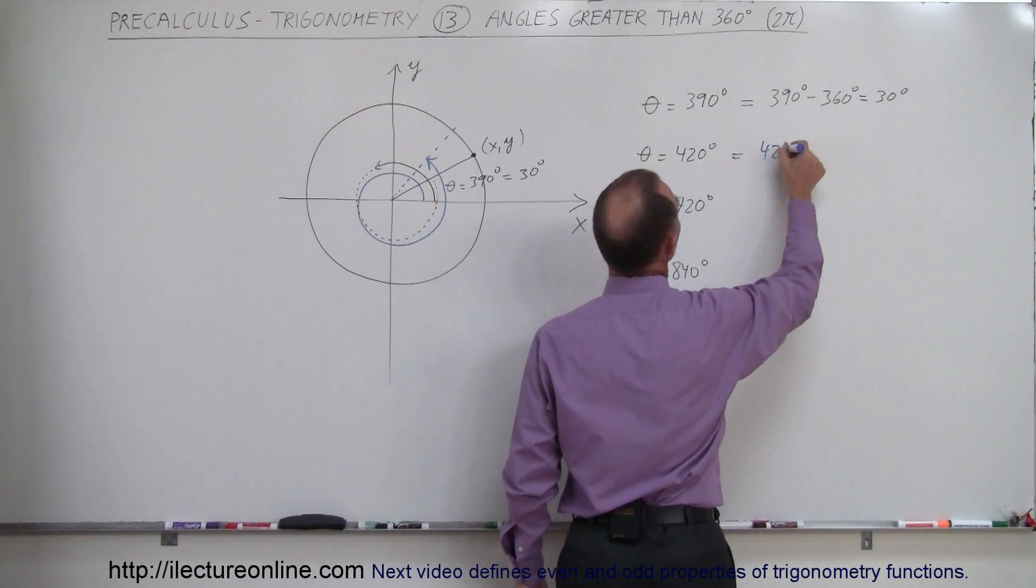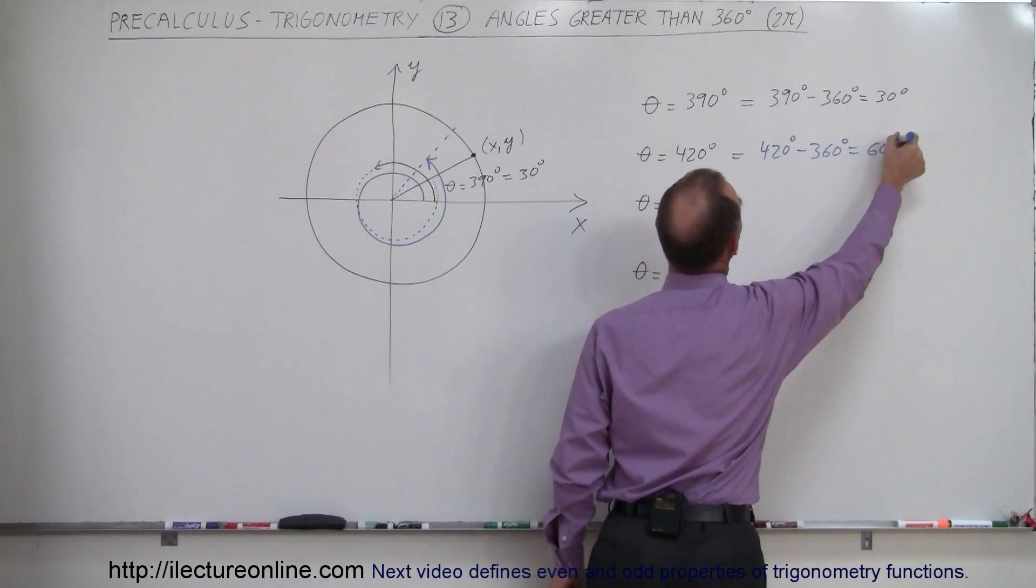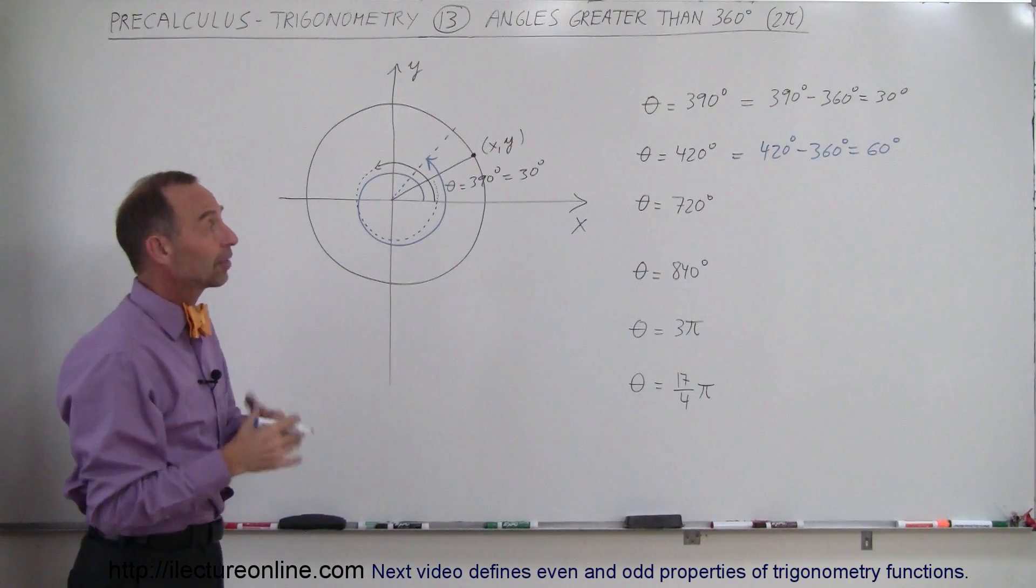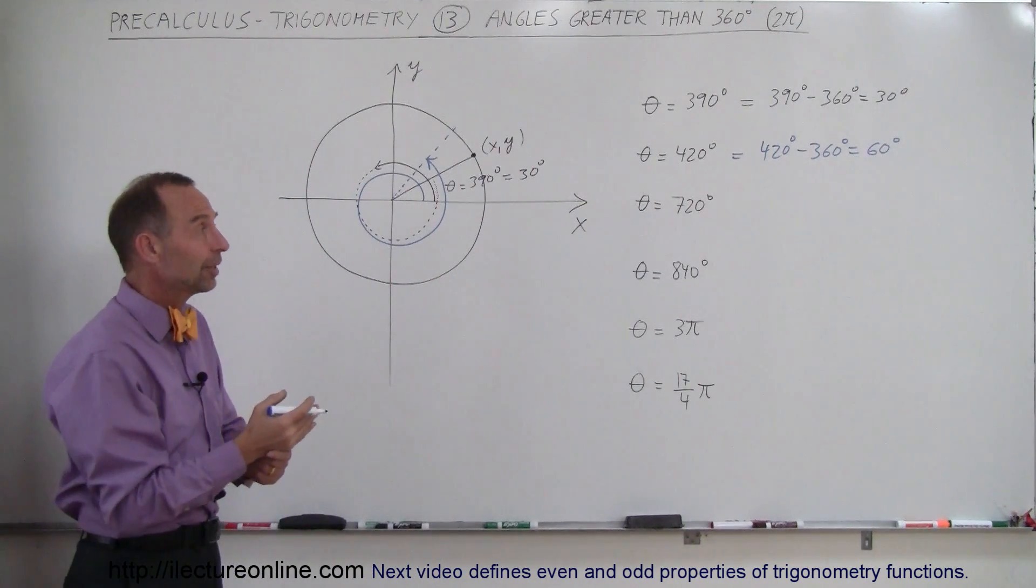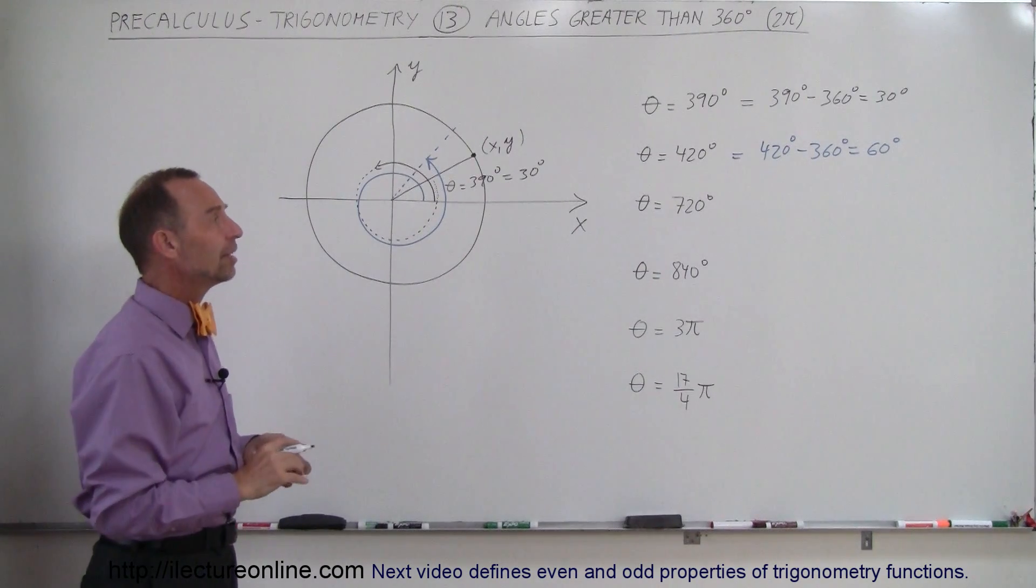And of course we can see that by simply subtracting 360 degrees from that, and we'll get 60 degrees. So therefore, all we need to do is take the angle that's bigger than 360, subtract 360 from it, and we get to an angle between 0 and 360 which is easier to work with.